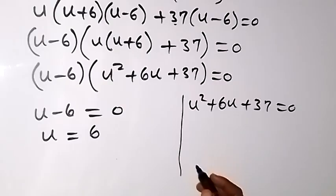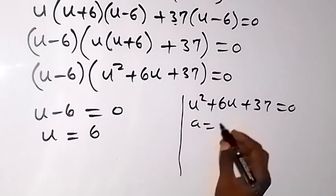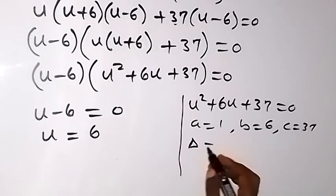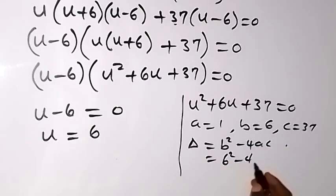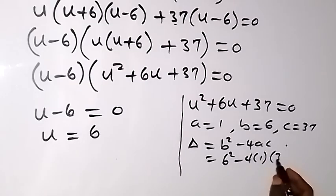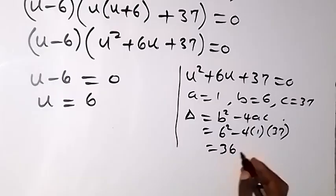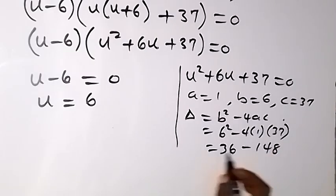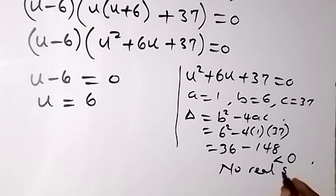For the quadratic u² plus 6u plus 37 equals 0, we have a equals 1, b equals 6, and c equals 37. Using the discriminant b² minus 4ac: 6 squared minus 4 times 1 times 37 gives 36 minus 148, which is less than 0. So we have no real solution from this case.